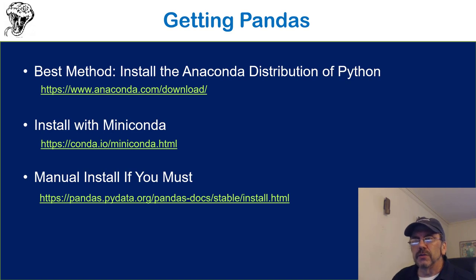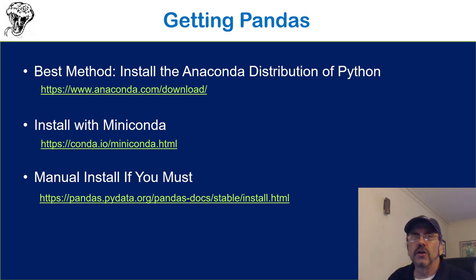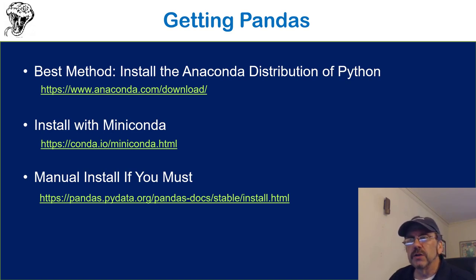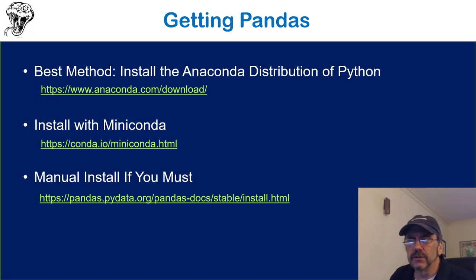So how do we get Pandas? There are three methods, and I'm covering them in the order I recommend. First, if possible, just install Anaconda. Go to the Anaconda distribution — the link is on the slide. If you search 'Anaconda Python' you'll find it. Installing the Anaconda distribution includes Pandas and all its dependencies, plus machine learning and visualization libraries. Anaconda is really the best distribution if you're interested in data science, though it requires a few gigabytes of disk space.